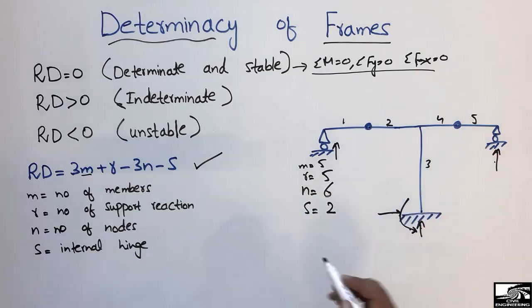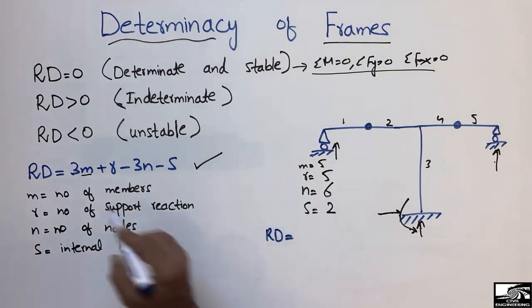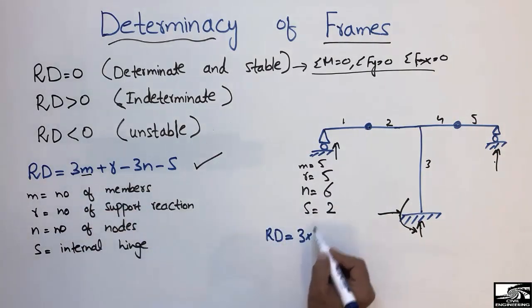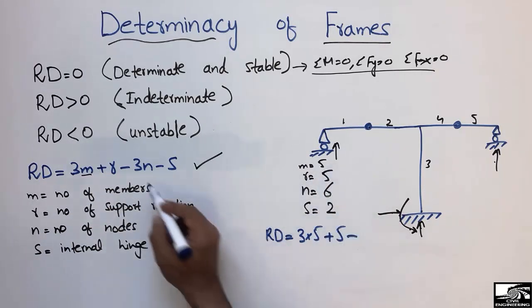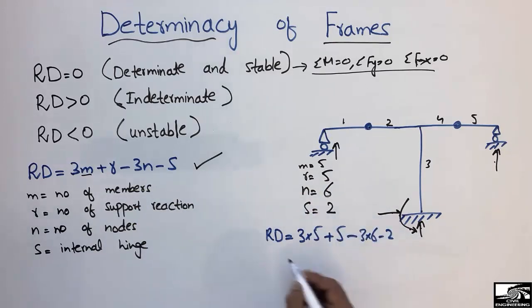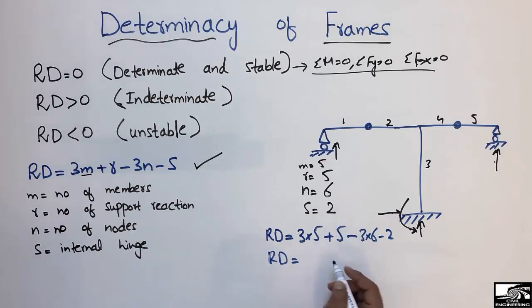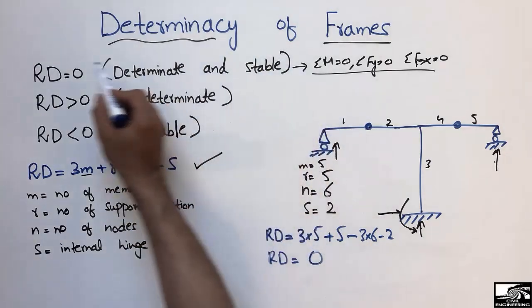Putting these into the formula: Rd = 3(5) + 5 - 3(6) - 2 = 15 + 5 - 18 - 2 = 0. Since Rd equals zero, this structure is determinate and stable.